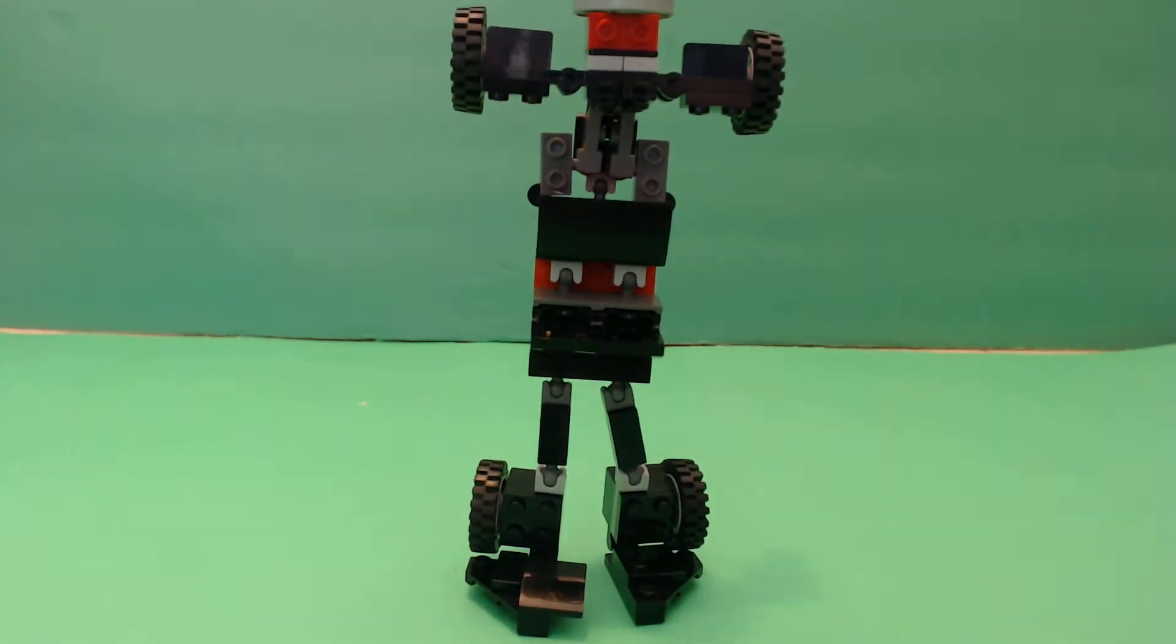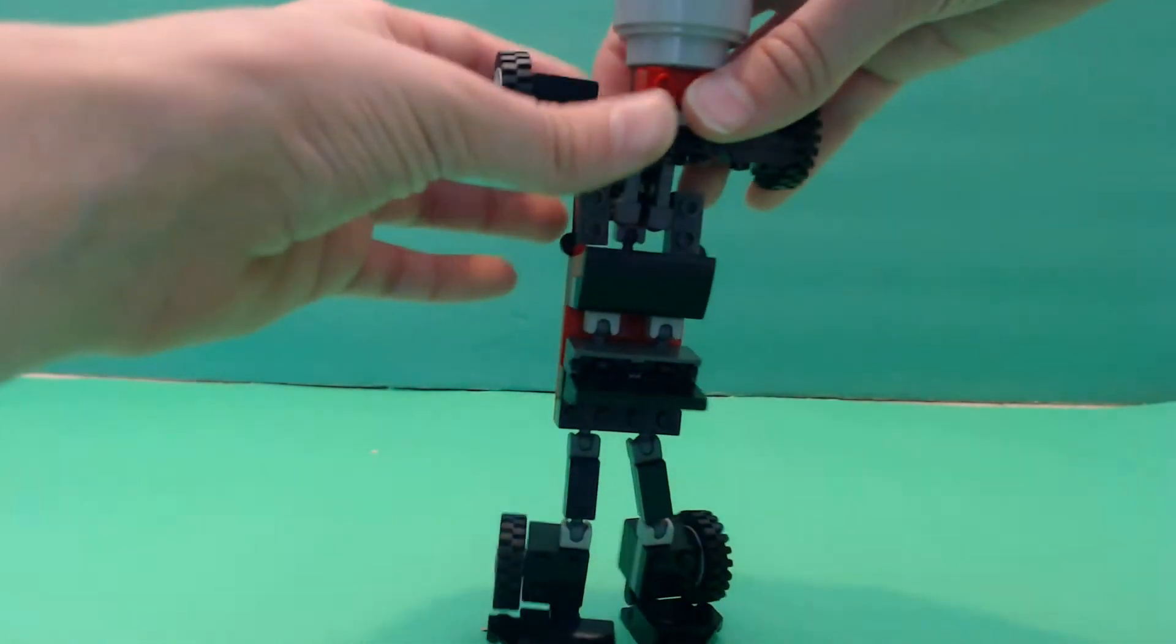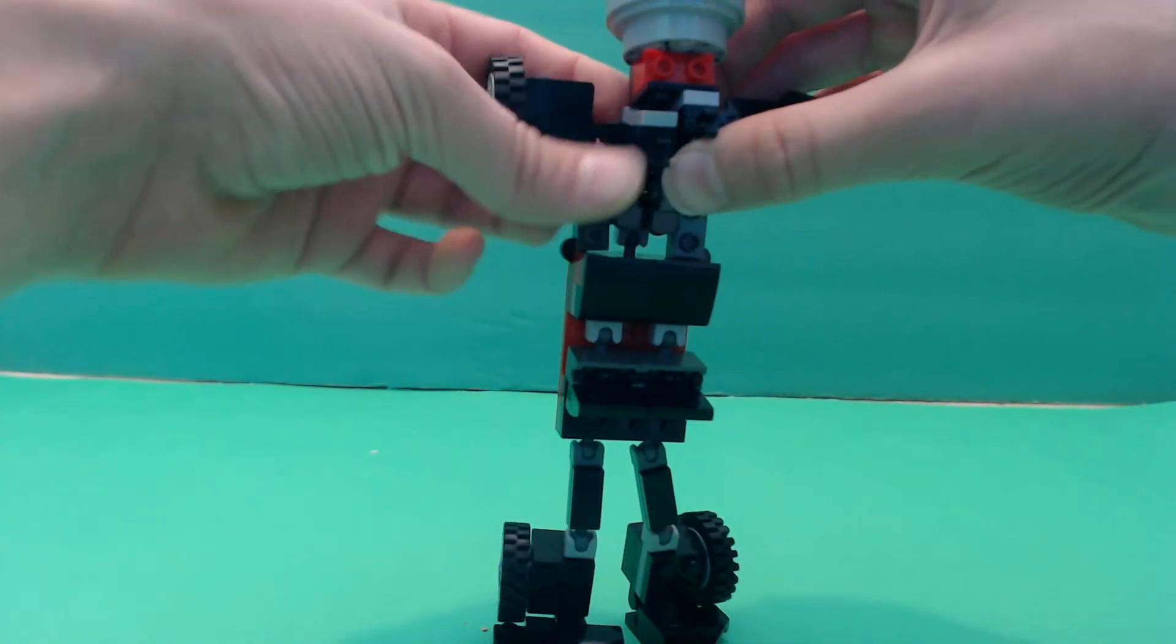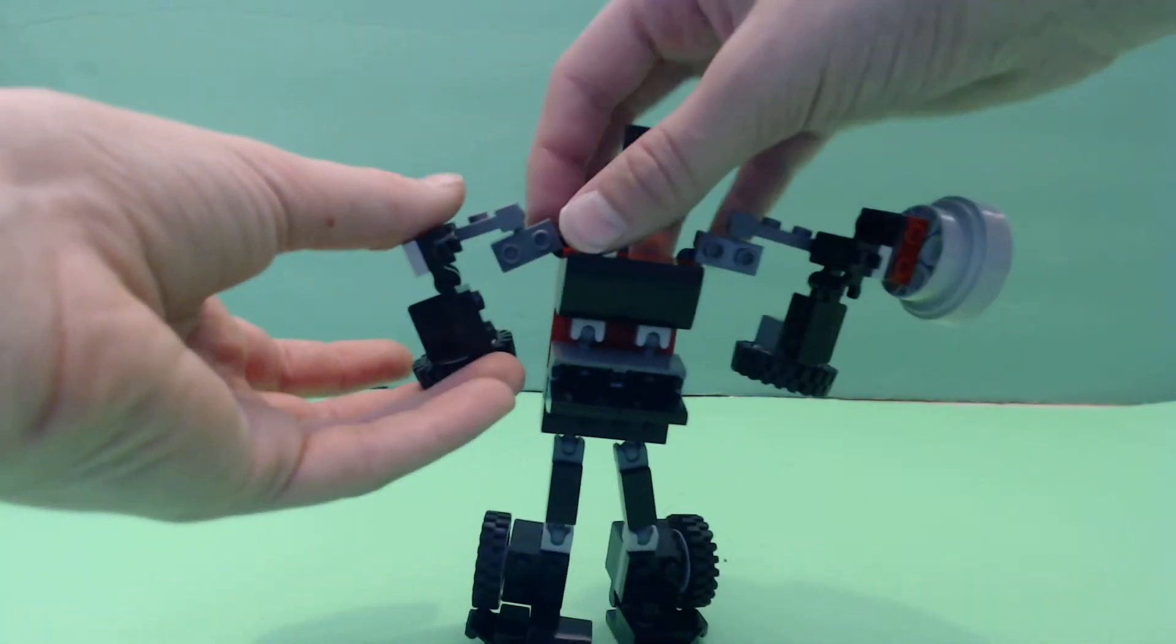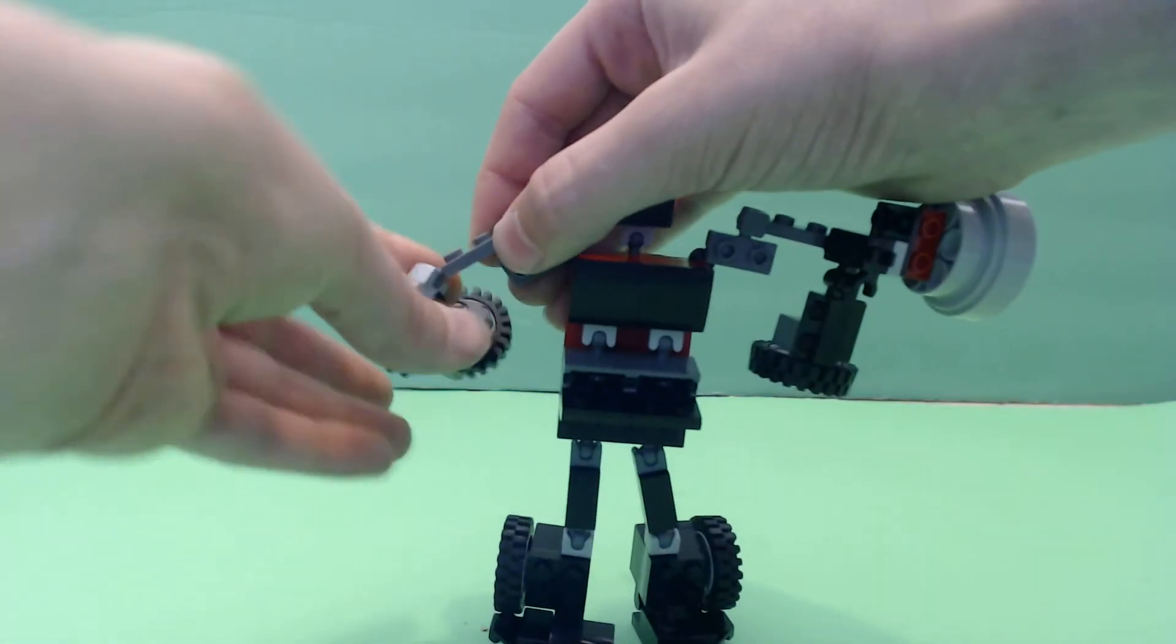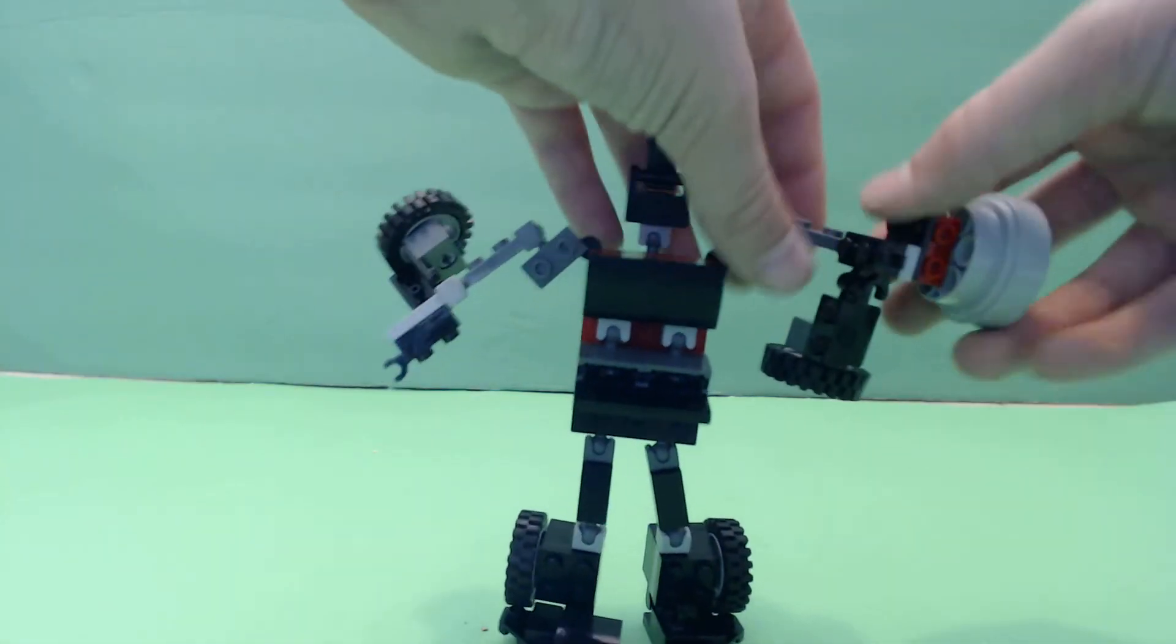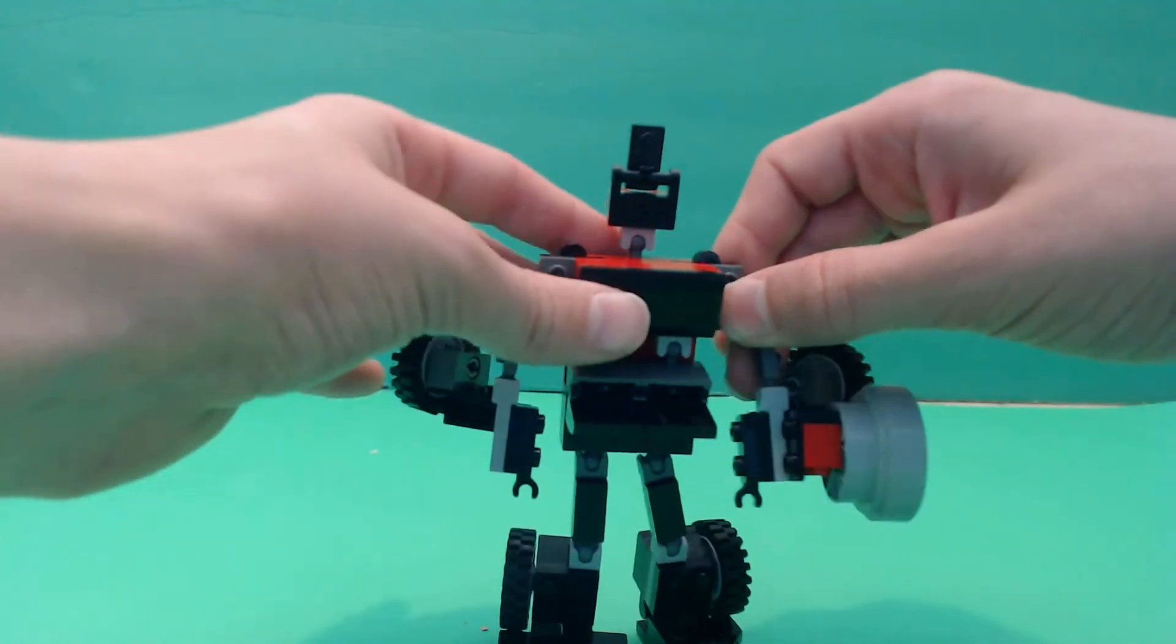And then you just want to, let me raise the camera up a little bit. You just want to grab this piece and disconnect it from there. And you just want to fold it down about halfway, and then you want to rotate this sideways, and you just want to fold that up. And do the same on the other side.